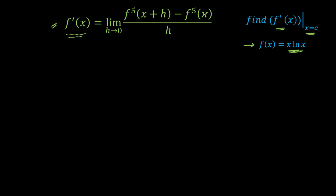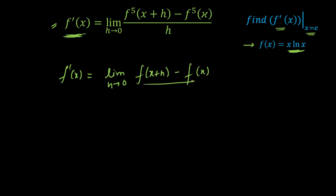Now, looking at f(x) = x·ln(x), you cannot use the product rule, quotient rule, or any standard rule here. Why? Because all those formulas — differentiation of x is 1, differentiation of ln(x) is 1/x — were derived from the original first principle definition: the limit as h→0 of [f(x+h) − f(x)]/h, also called the ab initio method.